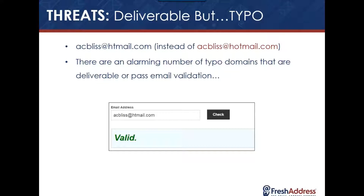The first one is deliverable but typo. This usually happens by accident. For example, you might see acbliss@htmail.com instead of hotmail.com — a common error to either mistype or forget a letter in the domain name. There are an alarming number of typo domains that actually pass email validation, and those need to be weeded out.